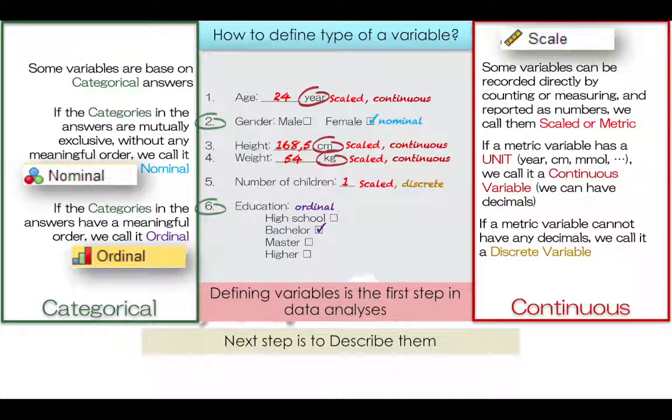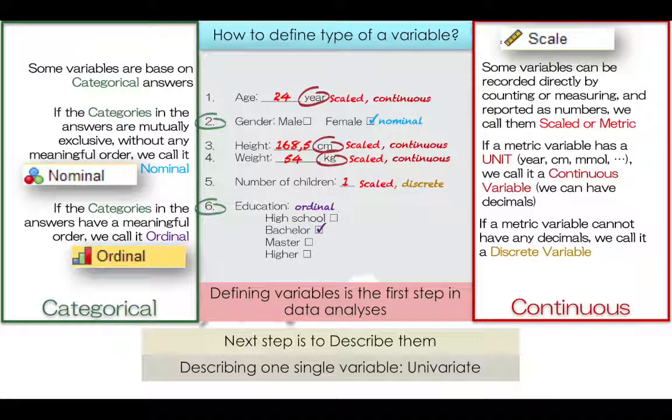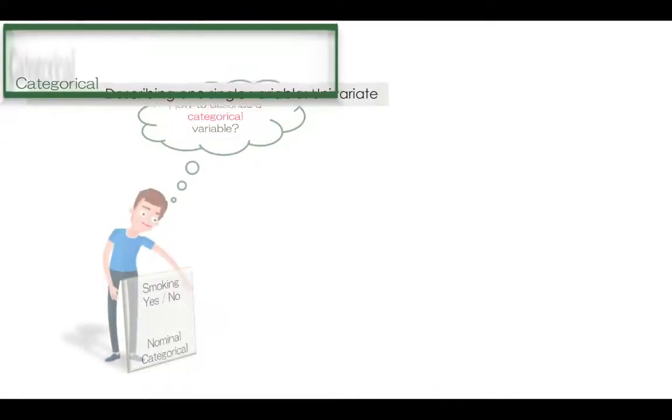In the previous lecture we reviewed the types of variables, which is a major concept underlying the subject of statistics. In this video we are going to see how we can describe a single variable. Let us start with a categorical variable.